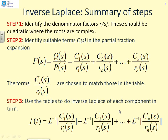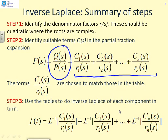Let's remind ourselves of the key steps in an inverse Laplace procedure. The first step is to identify the denominator factors Rᵢ — these need to be quadratic factors where the roots are complex. The second step is to do the partial fractions: take your original transfer function Q over P and write it as c₁/r₁ + c₂/r₂ + ... + cₙ/rₙ, where the Rᵢ are in minimal form — something like s+a for real roots and a quadratic for complex roots.